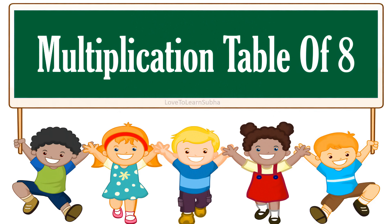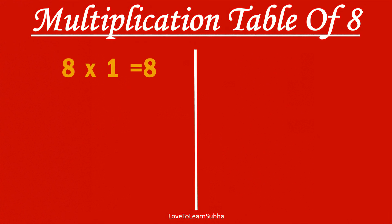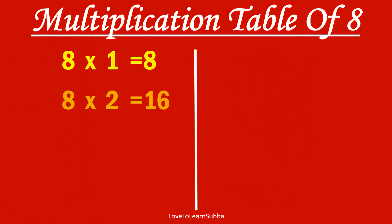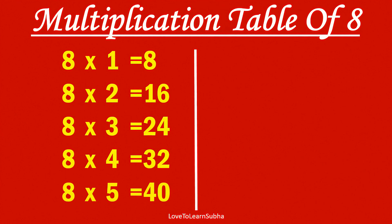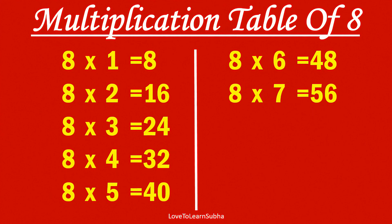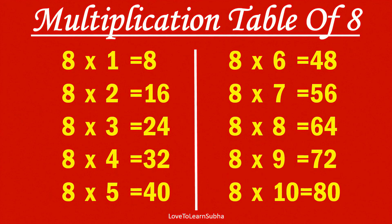Multiplication table of 8. 8×1 is 8, 8×2 is 16, 8×3 is 24, 8×4 is 32, 8×5 is 40, 8×6 is 48, 8×7 is 56, 8×8 is 64, 8×9 is 72, 8×10 is 80.